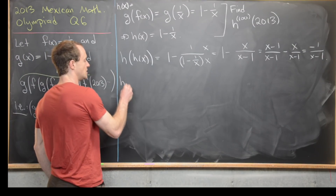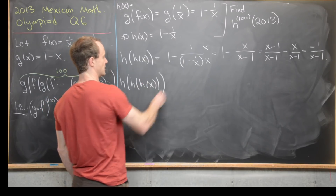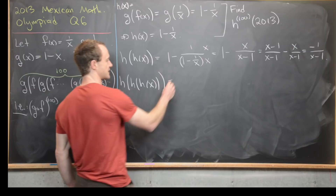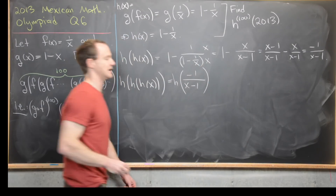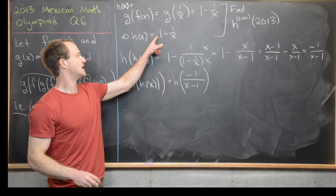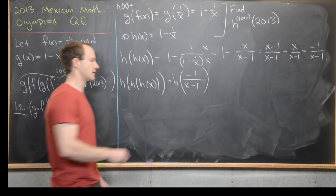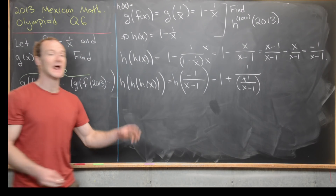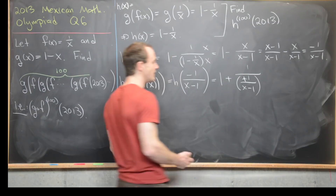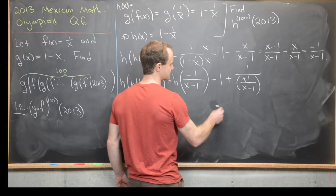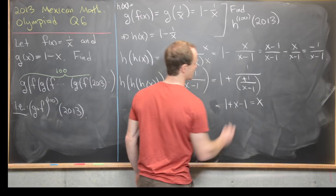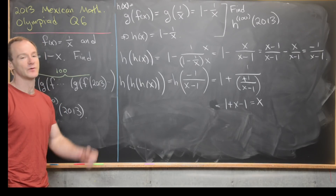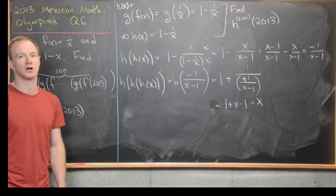Now let's find h composed with itself three times — h∘h∘h(x). We already know h∘h(x) = -1/(x-1), so this becomes h(-1/(x-1)) = 1 - 1/(-1/(x-1)). The second term is the reciprocal of the reciprocal of (x-1), which simplifies to x-1. So we get 1 + (x-1) = x. Composing h with itself three times gives the identity function. This means composing h any multiple of three times also gives the identity.